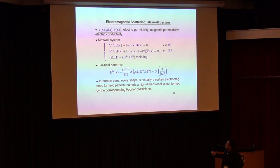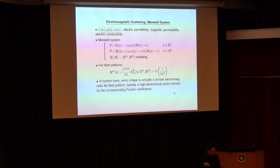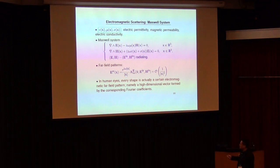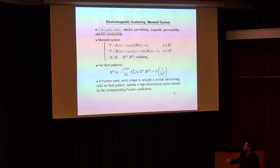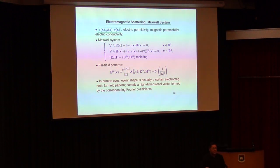You can also do this for electromagnetic scattering. Using electromagnetic waves, you can get a far-field pattern and establish a one-to-one correspondence between the geometry and the electromagnetic far-field pattern. In fact, in human eyes, every shape is actually a certain electromagnetic far-field pattern. That means every shape we see is actually a high-dimensional vector formed by the corresponding Fourier coefficients.